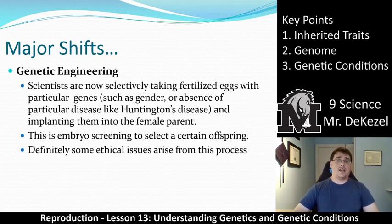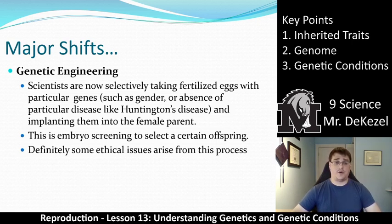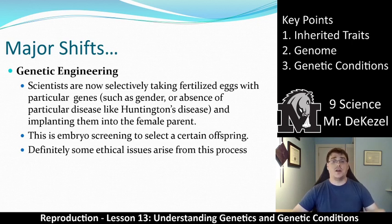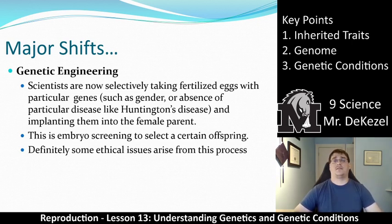We have also moved on to genetic engineering, which is a very controversial topic. It involves changing genes to fit what we want, or doing tests to find out if an embryo has a particular disorder. Scientists are now selectively taking fertilized eggs with particular genes and implanting them into a female parent — essentially choosing what genes you want in your baby. This embryo screening raises definite ethical issues, like whether it's okay to select only a healthy baby, or to select for traits like eye color.